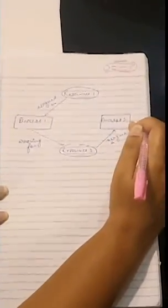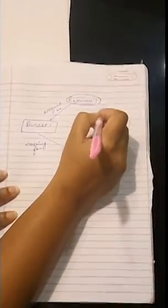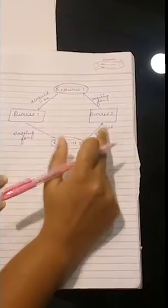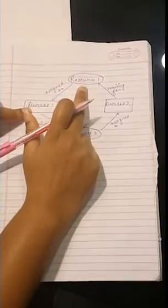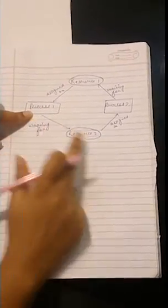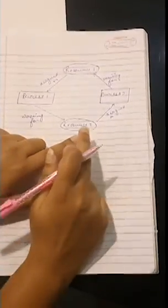So this means that the process one is already having resource one but it is waiting to have resource two in order to complete its operation. And in the same way, the resource two is already with process two, this is assigned to process two, and the process two is waiting for resource one. So this means that process two needs resource one in order to complete its operation.